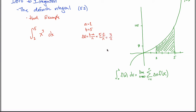Delta x is the length of each individual rectangle, and all the rectangles together span a length from two to five — that's three — divided by n because I have n rectangles to span that space. xᵢ is used to specify the height of the i-th rectangle; it gives you the x value that corresponds with the height of that rectangle. f(xᵢ) will end up being the height of the rectangle. xᵢ is always a plus i·Δx. In this case a equals two and Δx is three over n, so xᵢ is written as two plus three·i over n.